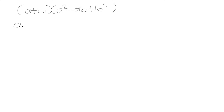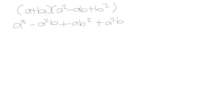a times a squared is going to give us a cubed. a multiplied by negative ab is going to be negative a squared b. a multiplied by b squared is going to be ab squared. Then b multiplied by a squared is going to be a squared b. b multiplied by negative ab squared is going to be negative ab squared. And b multiplied by b squared is going to give us b cubed.